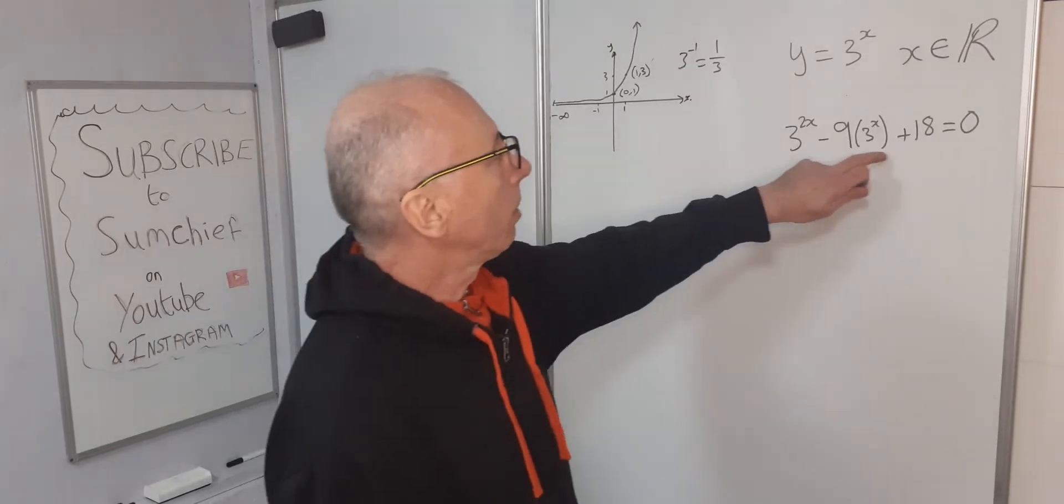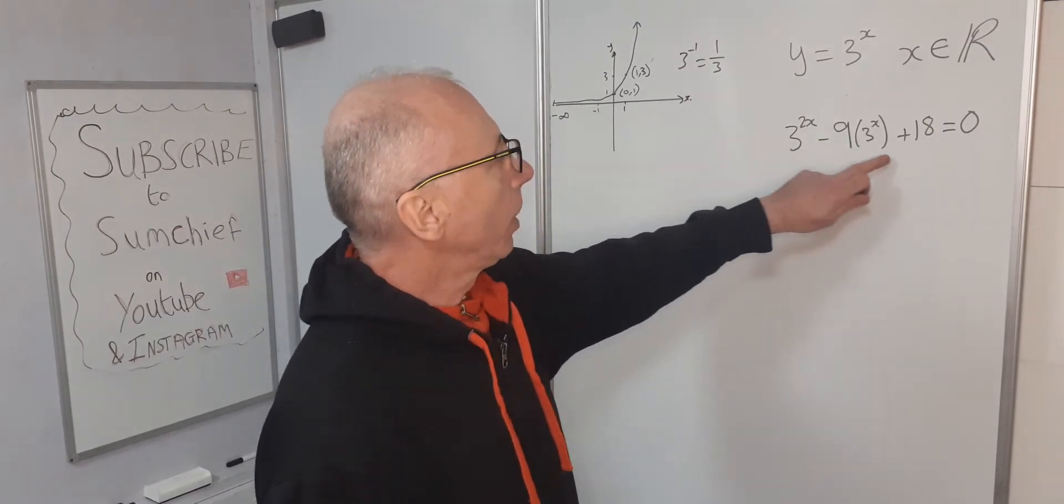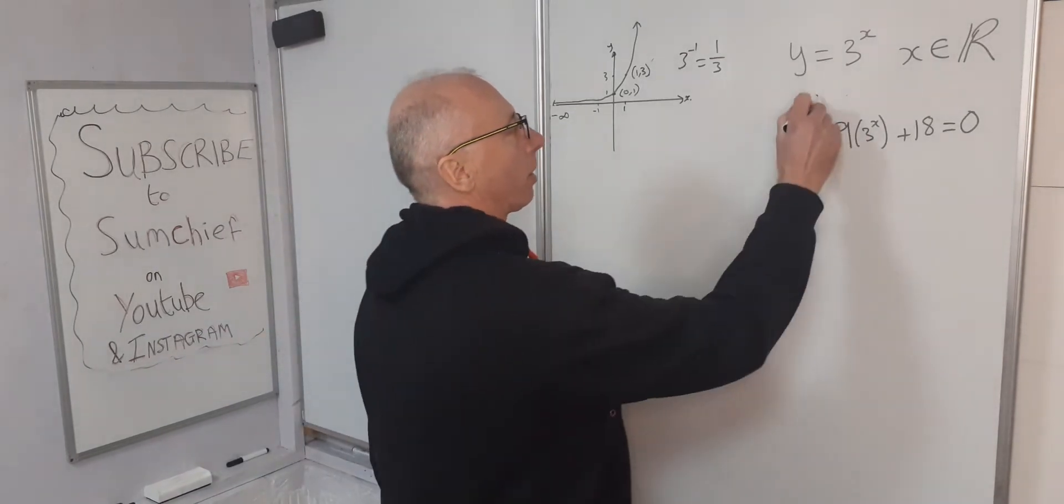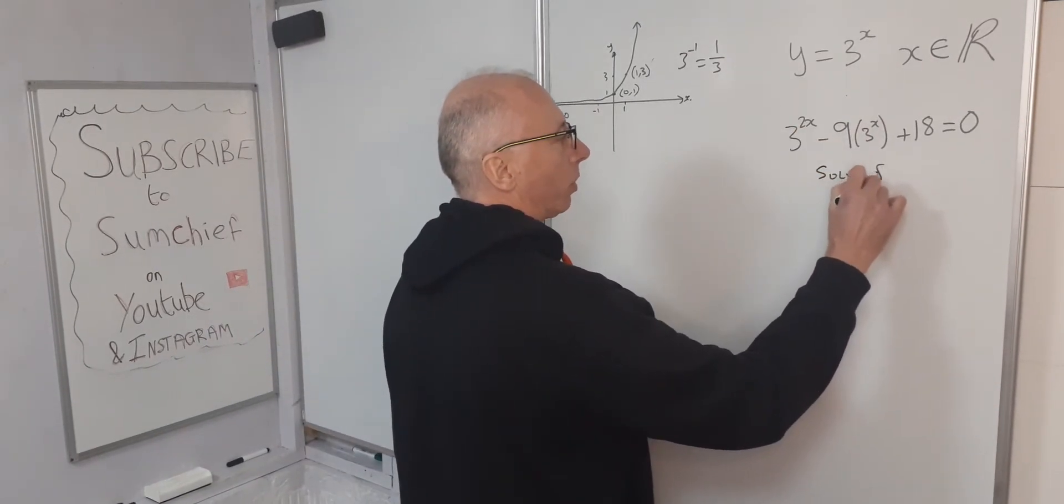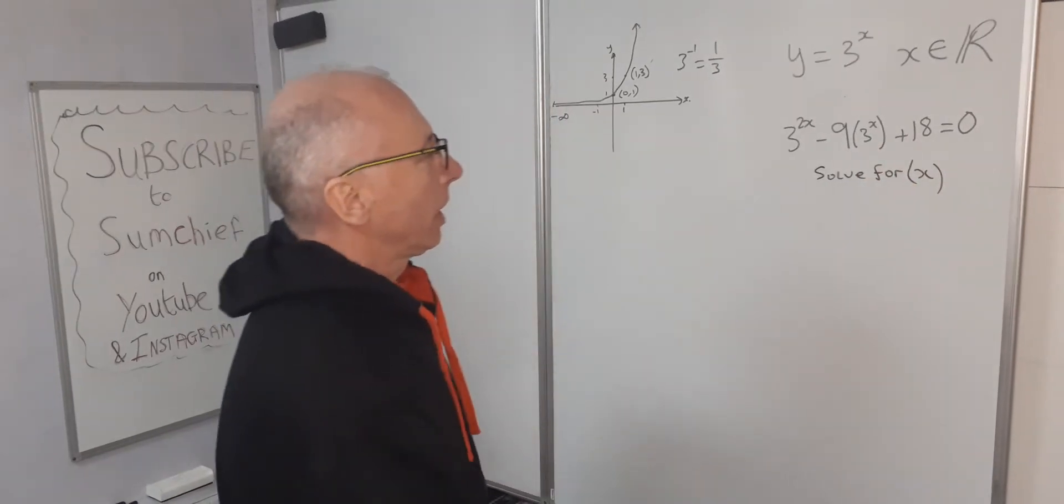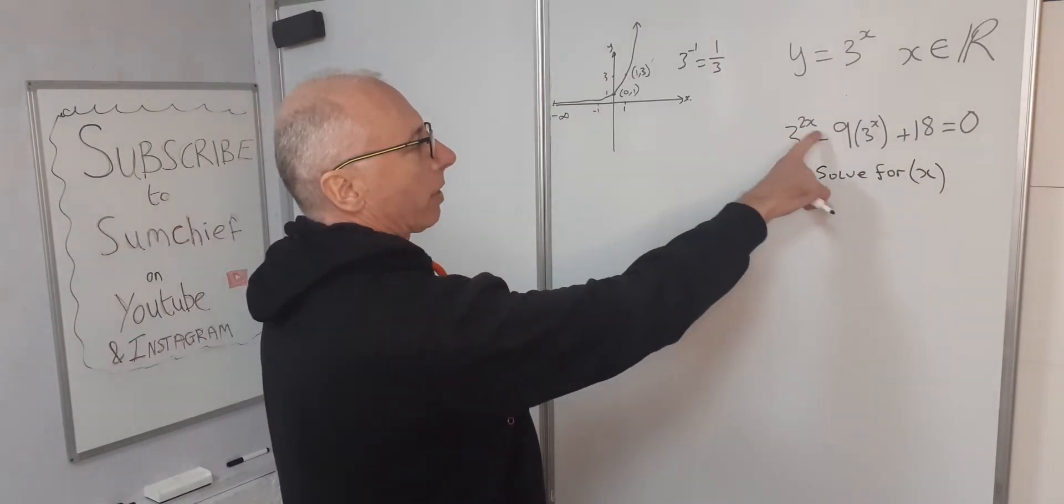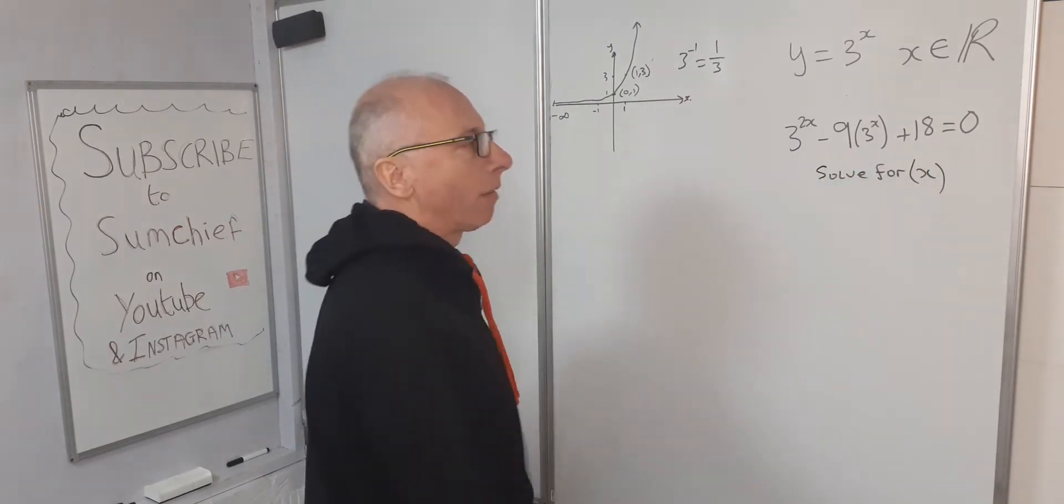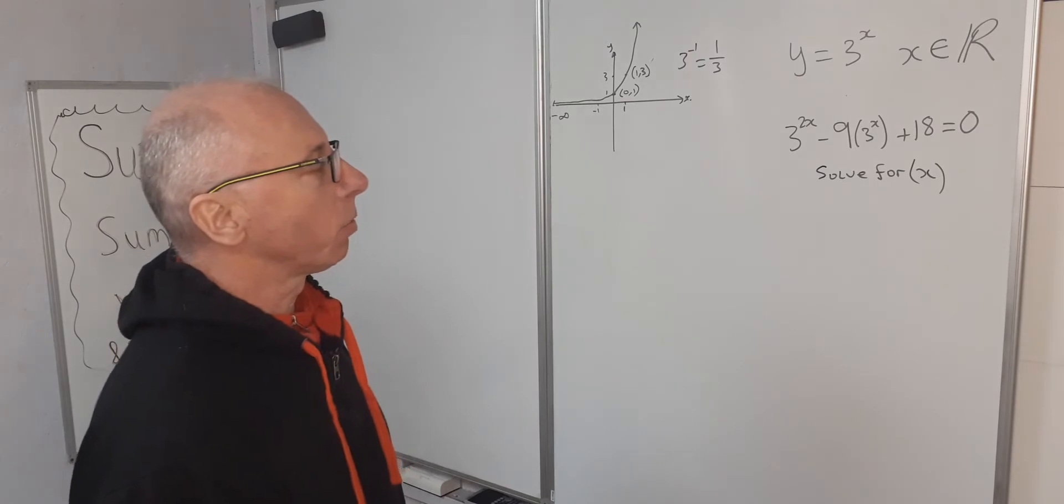So now we need to work out this equation here. Now we want to solve for x. Okay, so we've got 3 to the 2x, 3 to the x and essentially 3 to the power of 0 there because 3 to the power of 0 is just 1.